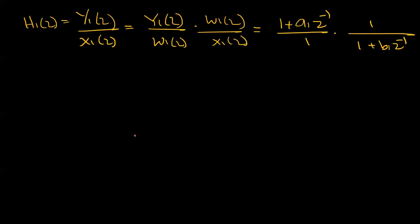This is h1 of z, where h1 equals y1 divided by x1. We apply Direct Form 2 to each section. So y1 and w1 represent the numerator and denominator of h1. This gives us the transfer function h1 of z implemented as a Direct Form 2 realization.